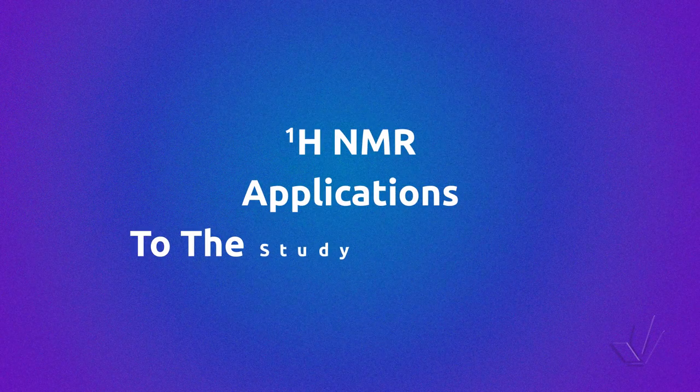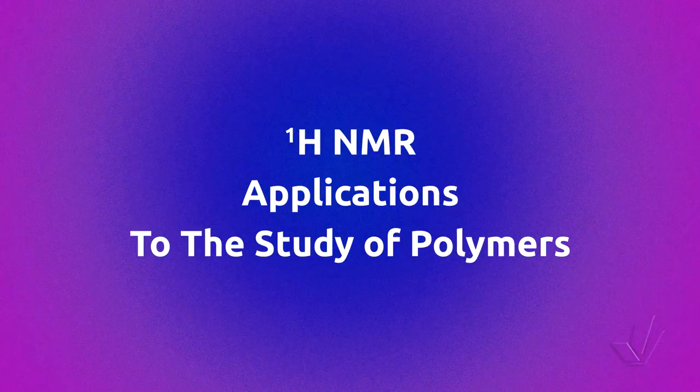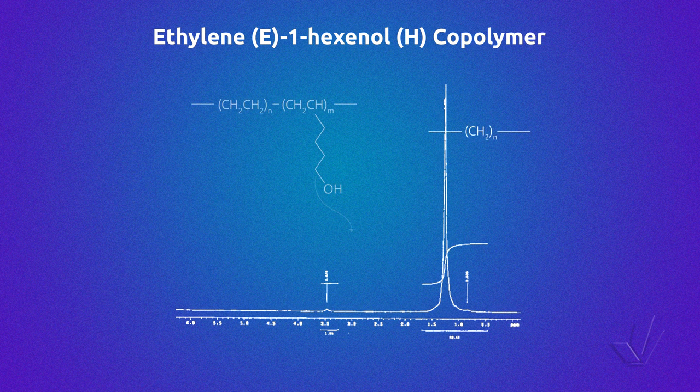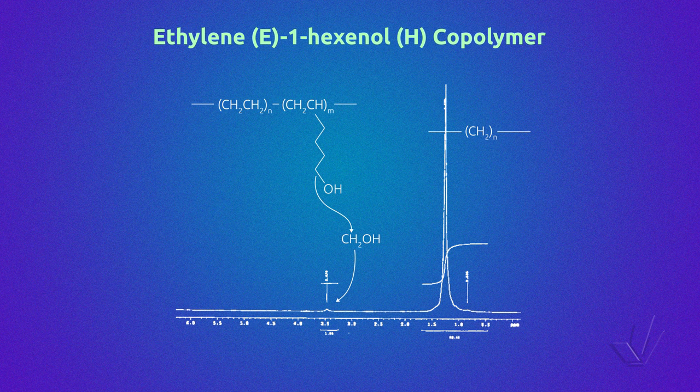Let's see now some proton NMR applications to the study of polymers. In all these applications, we are going to use the area of the NMR signal or integral, because they are proportional to the number of protons generating that peak. Proton NMR is good for polymers that have functional groups, because due to their electronegativity, heteroatoms deshield some resonances that stand apart from the others. In this copolymer of ethylene-1-hexanol, the only resonance separated from the other aliphatic protons is the CH₂ adjacent to the hydroxyl functional group.